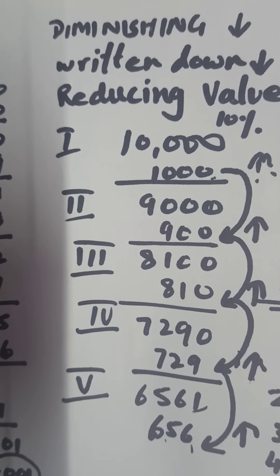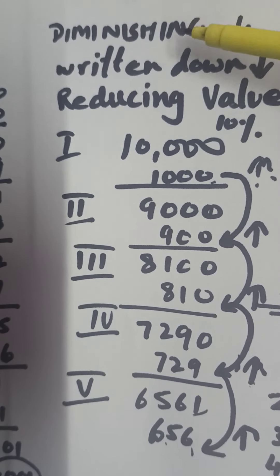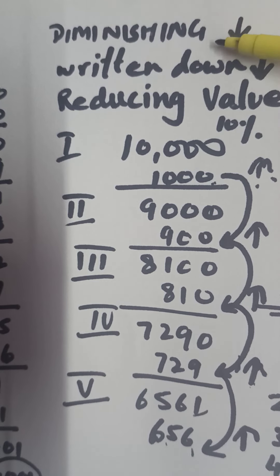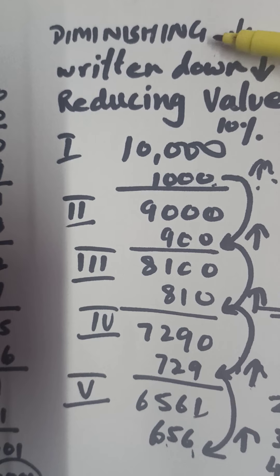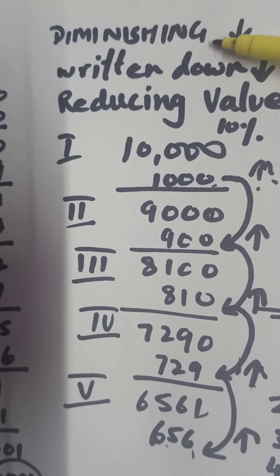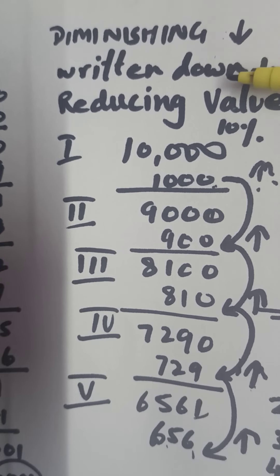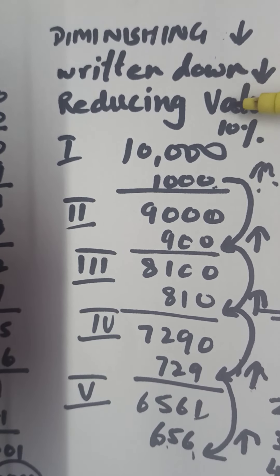Now we proceed with the diminishing balance method today. The diminishing balance method - we had depreciation. Yes, this is depreciation. I had started with the diminishing balance method the day before yesterday. On Saturday, we discussed the diminishing balance method, also called written down value method or reducing value method.